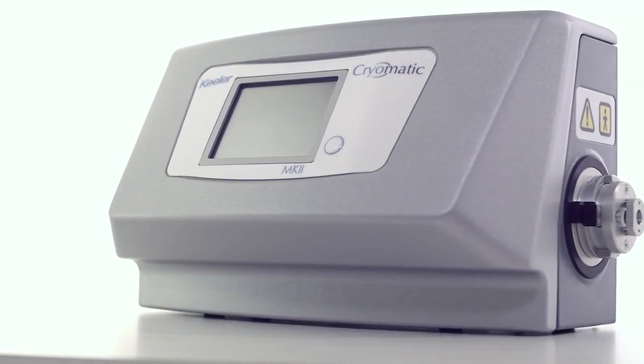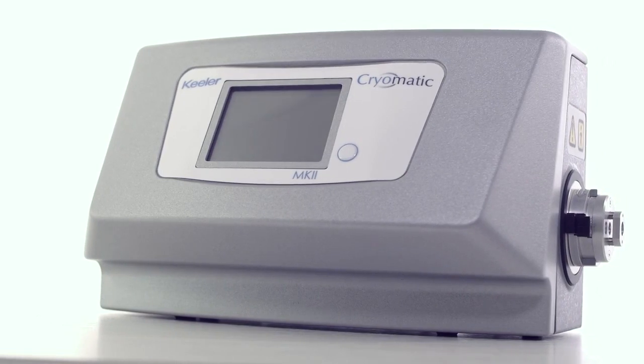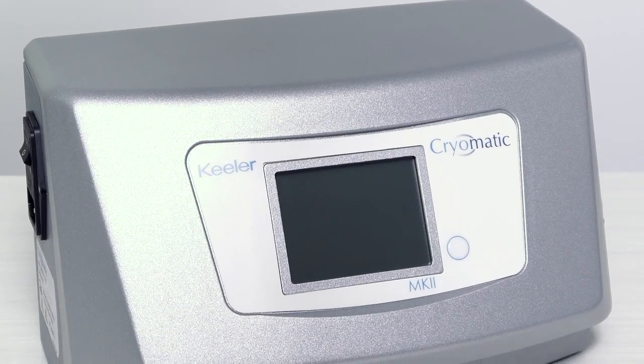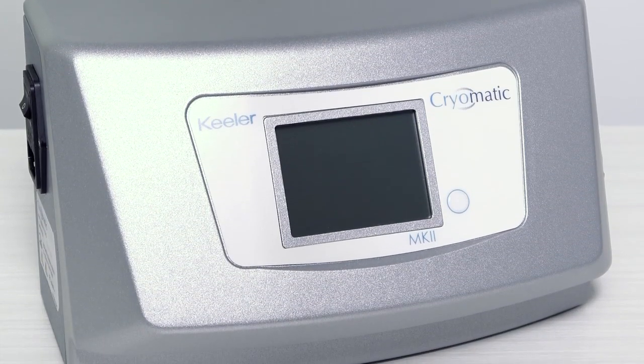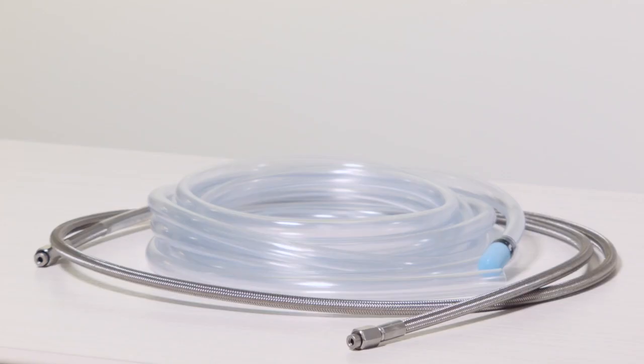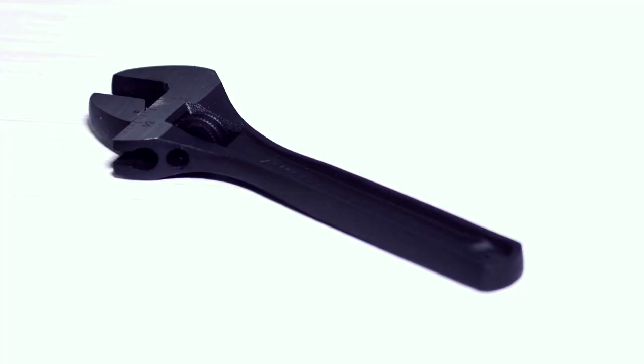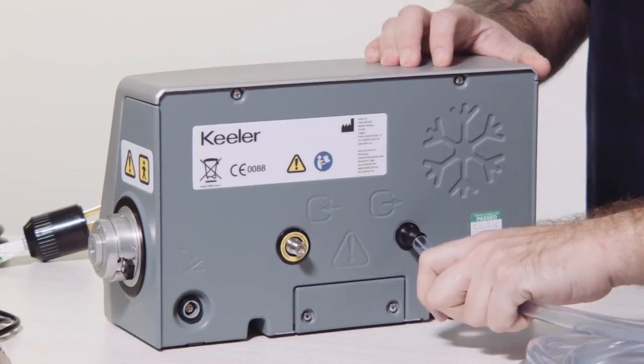This video will outline the procedure for installing and setting up a Keeler cryo system. The Cryomatic system consists of the console, the probes, the foot switch, the mains cord, the high-pressure gas hose, the exhaust hose, and an adjustable wrench. Start by installing the exhaust hose.